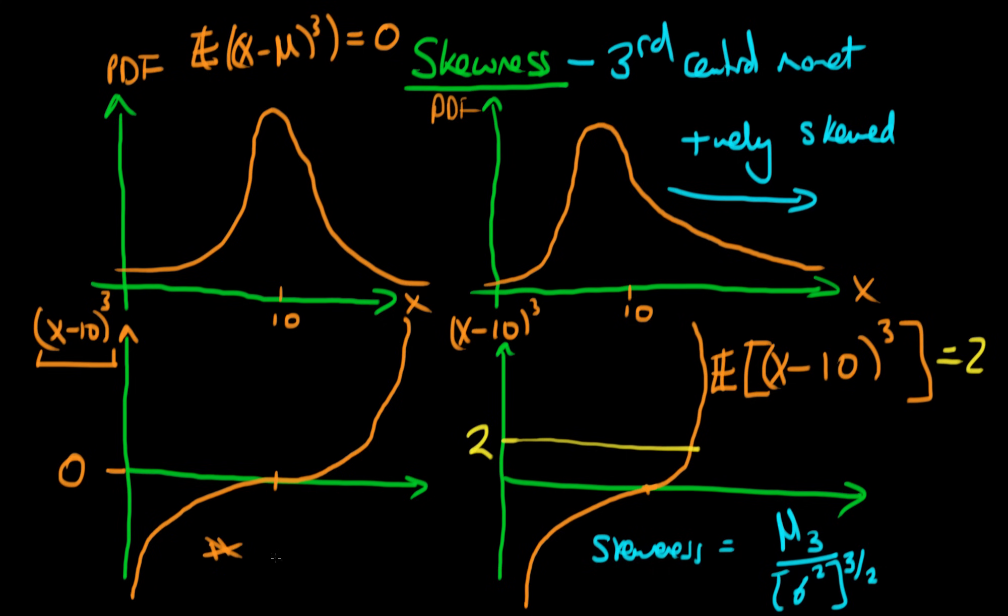Predictably, for a normal distribution, the skewness is zero. For any distribution that isn't symmetric, we'll have a skewness value that isn't equal to zero.